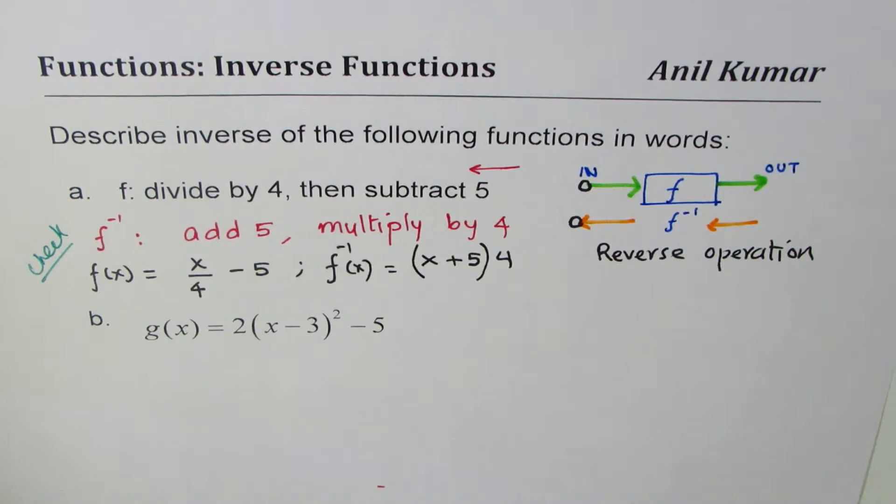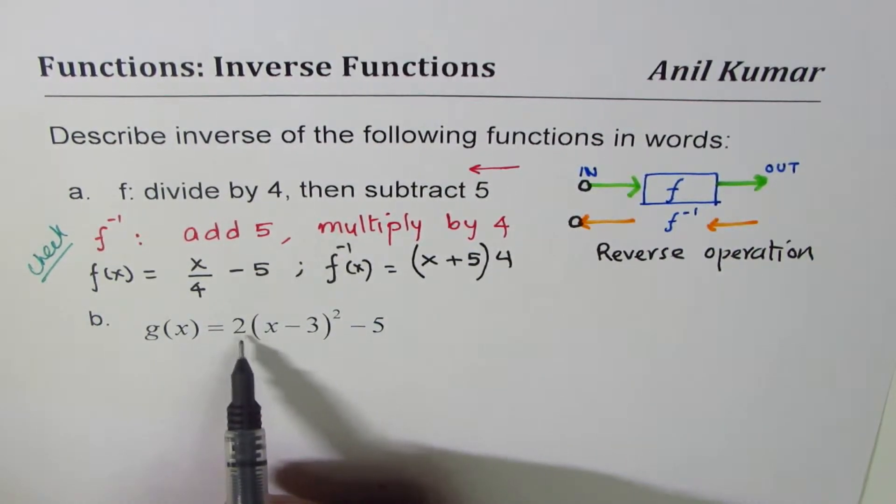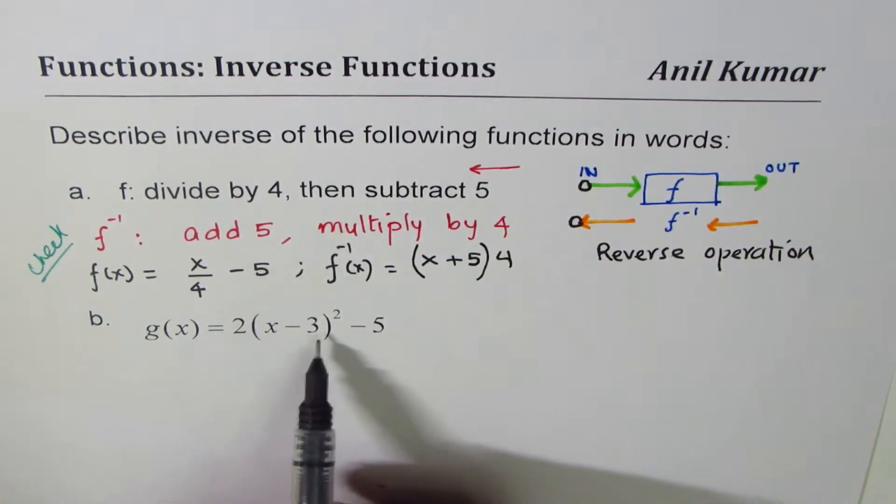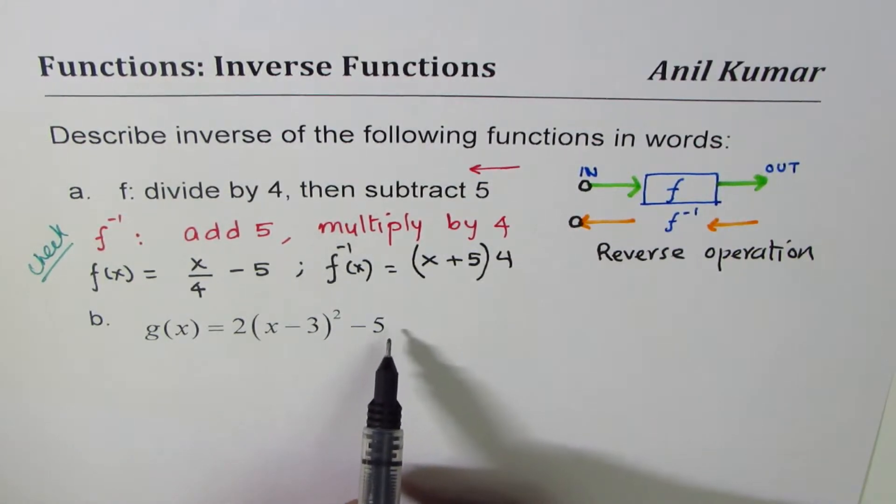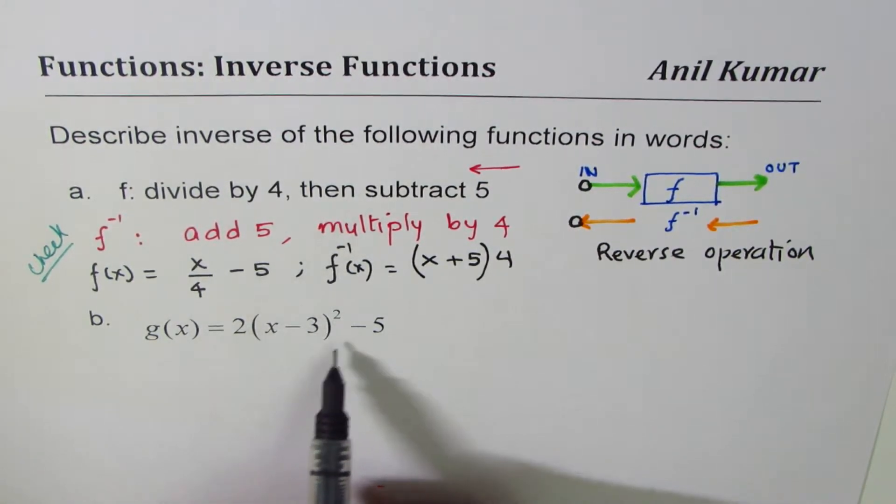Now let's do this one. Now g(x) is what? g(x) is, if you read this equation, 2 times, what is this? 2 times (x minus 3) whole square minus 5. So what do you do here first? First you take away 3 from x, you square, multiply by 2, and then you take away 5. So what are the operations involved here?